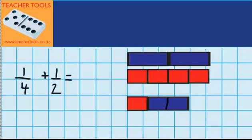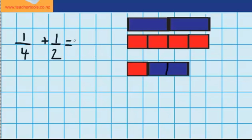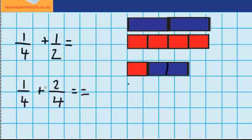Now let's just record over here what I did. I couldn't add them together straight away because they didn't have the same denominator. So I pulled down one quarter, which we saw over here. And then I had to split my half into quarters, and I found out that one half is the same as two quarters. And now that they've got the same denominator, I'm able to add them together. One quarter plus two quarters equals three quarters, which is what you can see over here.